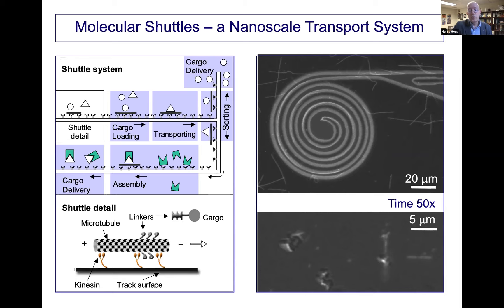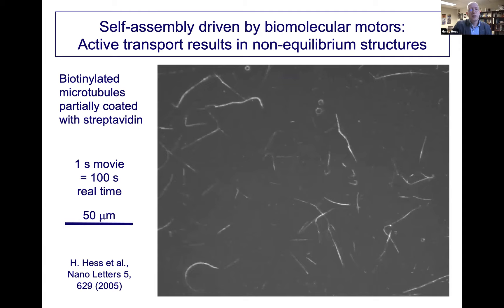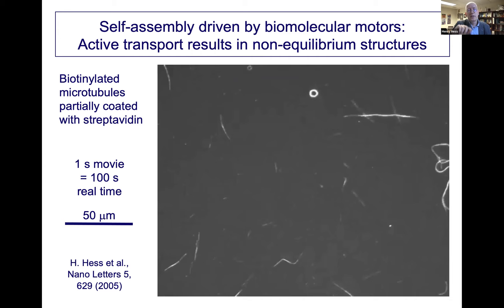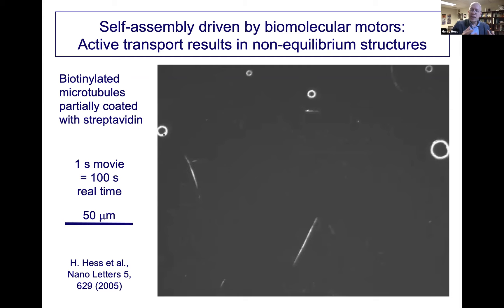One interesting thing you can do is make the microtubules sticky. If you do that and have them glide on the kinesins, they can stick together when they meet. What emerges is that they form long wires, and when the tip of a wire catches up with the middle, they form a spool. So you have patterns emerging — it's a non-equilibrium process, and you have very interesting self-assembled phenomena, which we studied for a few years.